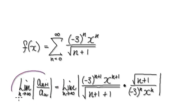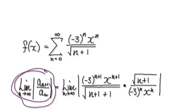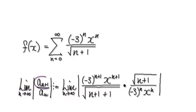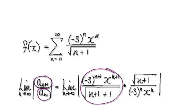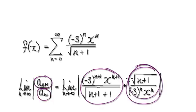So with the ratio test, we always need to compute this value here. So we need to get a_{n+1}, which would be this, divided by a_n. Divided by a_n is the same as multiplying by the reciprocal of a_n, which would be this.